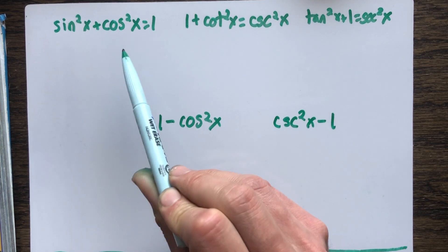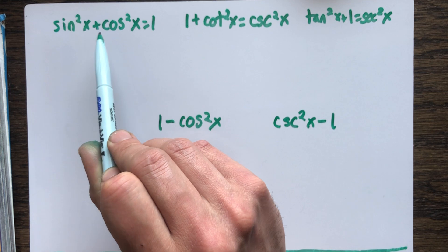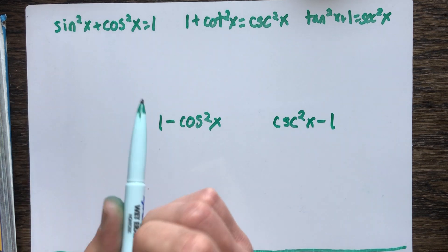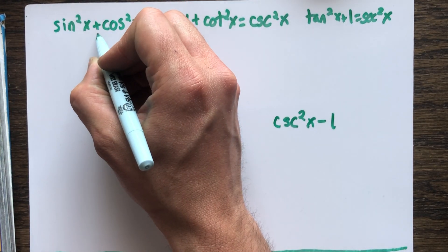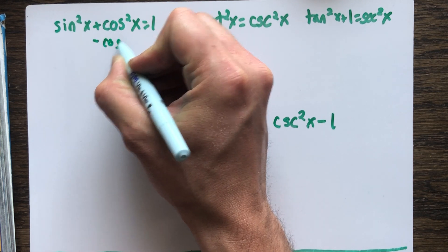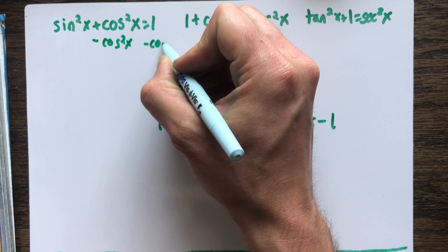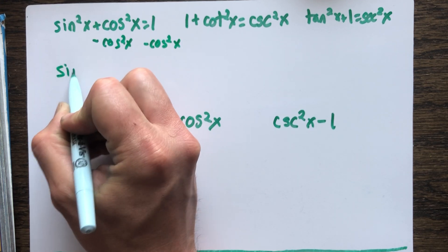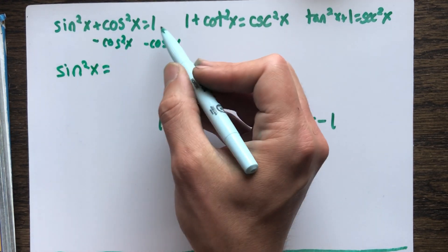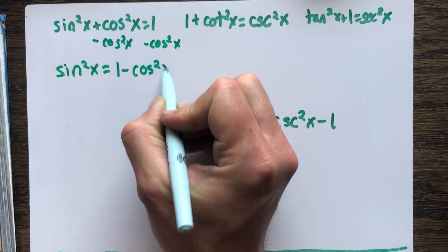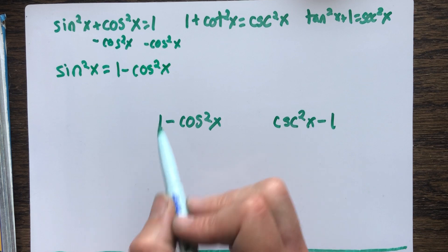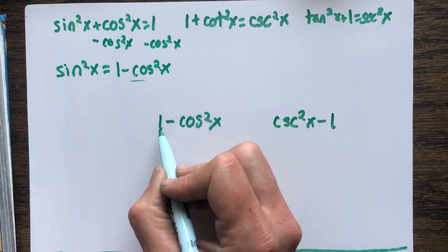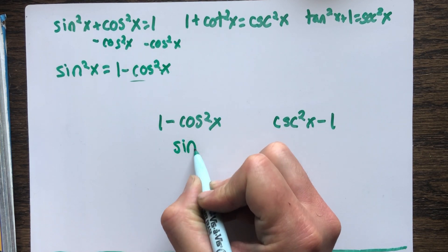You can still use these identities because we know they are true. Since sine squared plus cosine squared equals one, you can rearrange it. Because I have one minus cosine squared, I can subtract cosine squared from both sides. Since it's an identity, I can move things from one side to the other, giving me sine squared equals one minus cosine squared. So I can replace one minus cosine squared with sine squared.